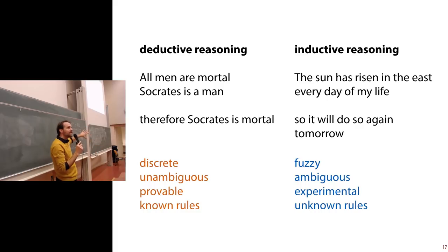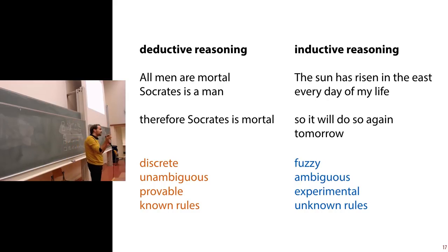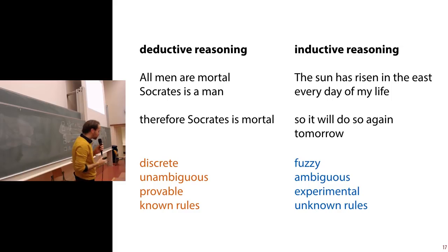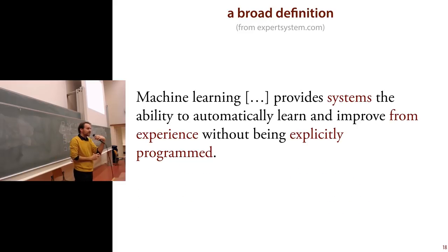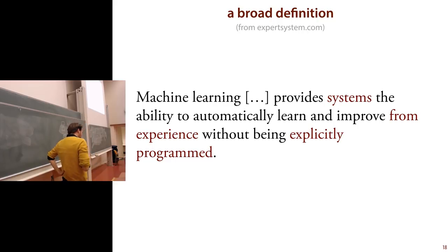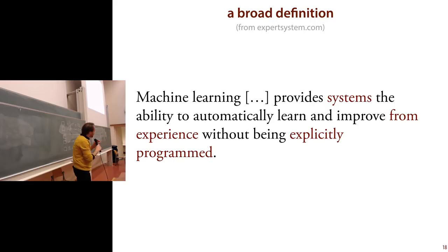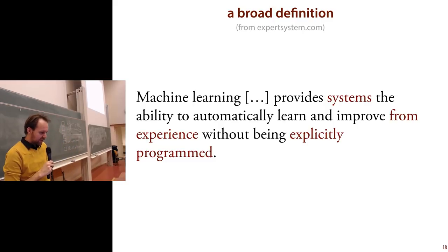Fast forward 200 years, where machine learning develops basically by people saying: we don't know how to do inductive reasoning formally — let's just try some stuff and see how far we get. And that field is called machine learning. A very broad definition says: machine learning provides systems the ability to ultimately learn and improve from experience without being explicitly programmed.